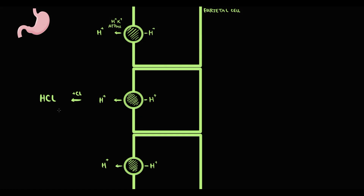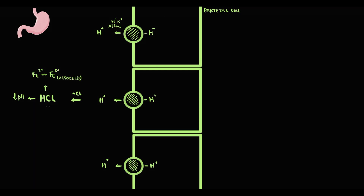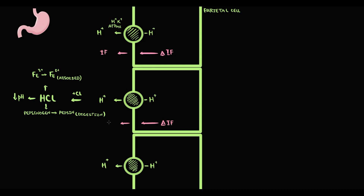Hydrochloric acid has several important functions. First, being an acid, it decreases intragastric pH. It also provides oxidation of iron from a +3 charge to a +2 charge — and we can absorb only +2 charge iron, so hydrochloric acid participates in iron absorption. Additionally, hydrochloric acid converts pepsinogen into pepsin, which provides protein digestion. Parietal cells also produce intrinsic factor, which is absolutely essential for vitamin B12 absorption. So parietal cells have a huge role in digestion.